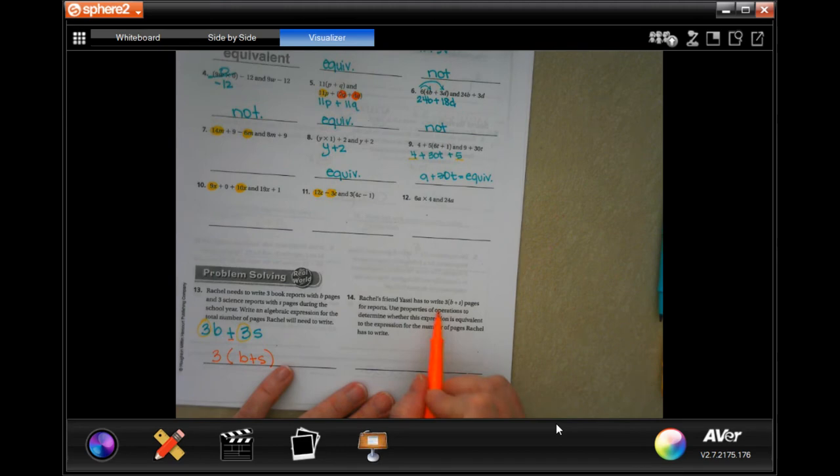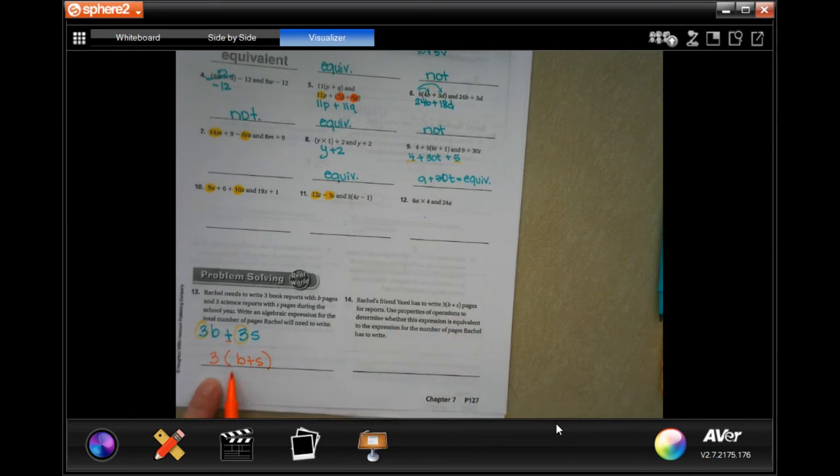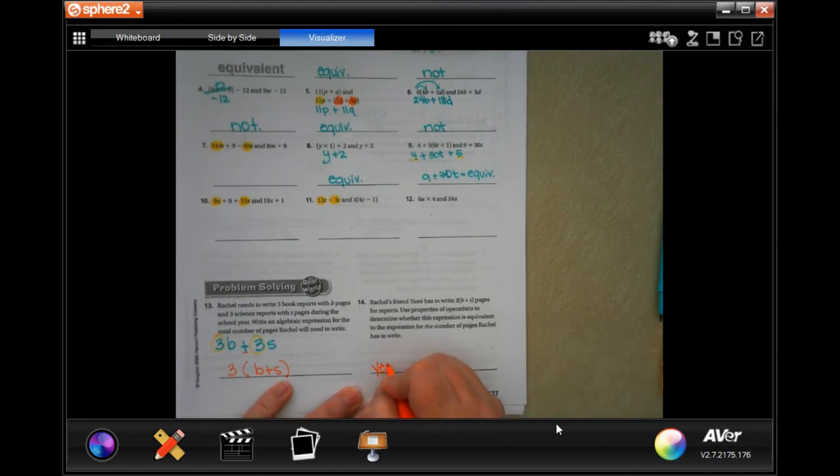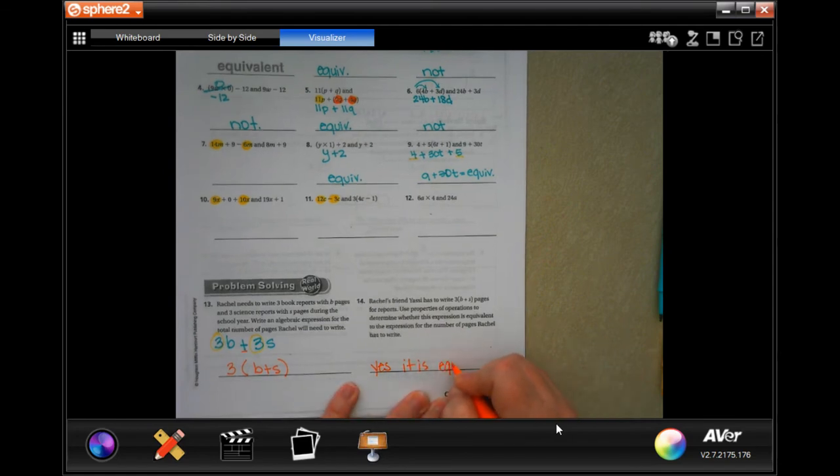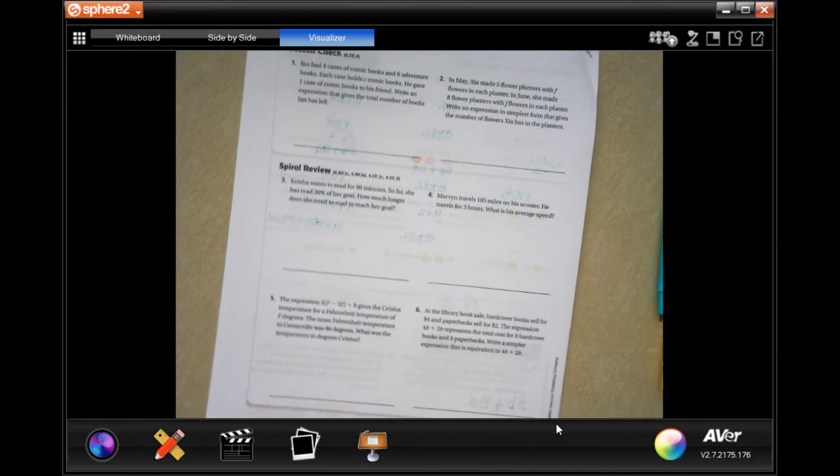Rachel's friend Yossi has to write 3, oh look, B plus S pages. Use properties of operations to determine whether this expression is equivalent. Well, we already said it is equivalent. Yes, it is equivalent.